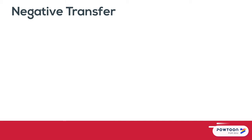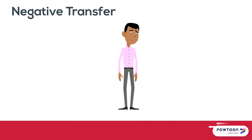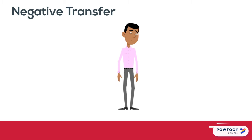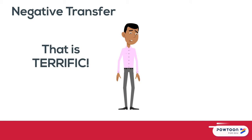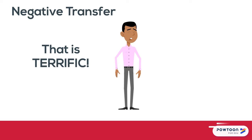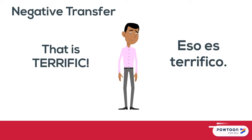Negative transfer occurs when learning or understanding in one situation hinders or stops learning in another situation. For example, while the word terrific in English looks similar to terrífico in Spanish, they mean very different things.